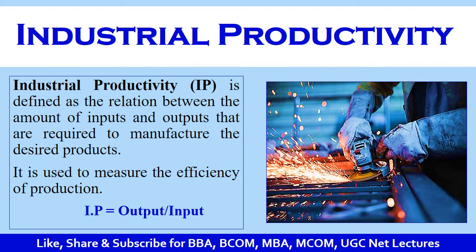Industrial productivity is the relation between the amount of inputs and the outputs that are required to manufacture the desired products — that is, the finished goods. Industrial productivity is basically the measurement of efficiency of production, and mathematically it is expressed as output divided by input. It is also the process of evaluating the efficiency of any particular plant or firm.